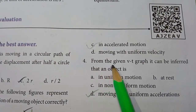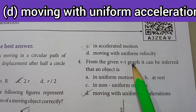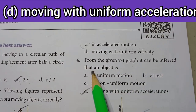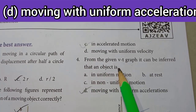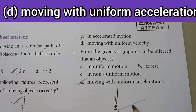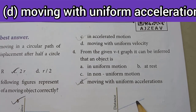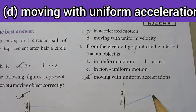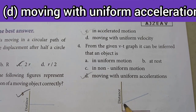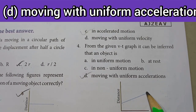4th one — from the given velocity-time (VT) graph, it can be inferred that an object is option D: moving with uniform acceleration.